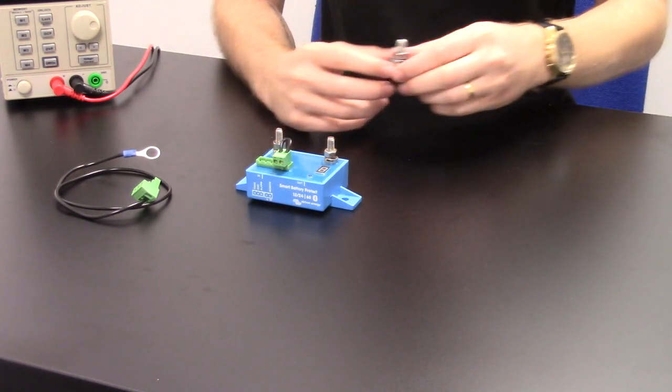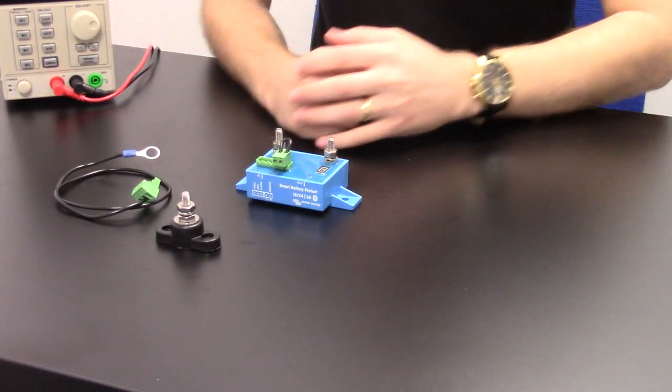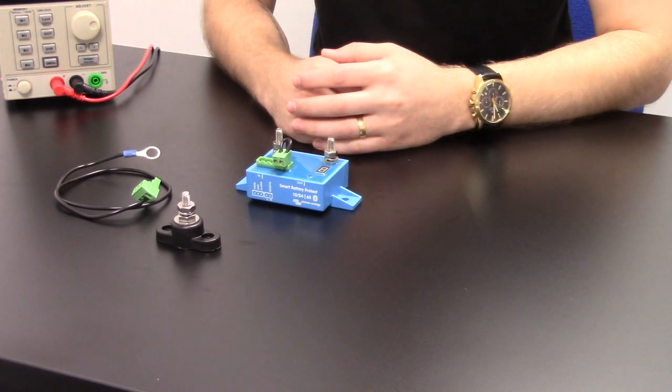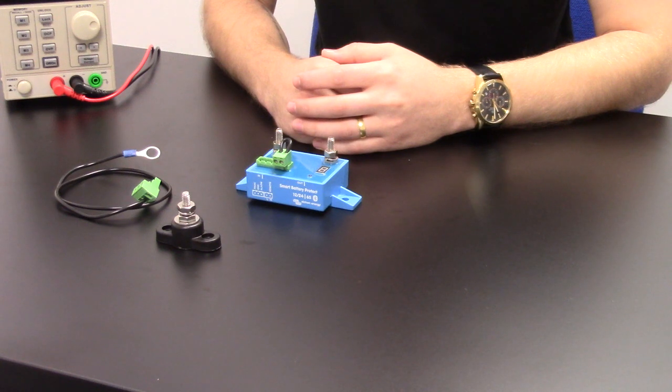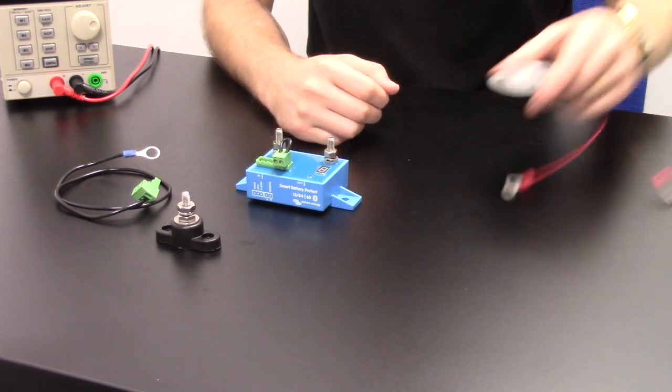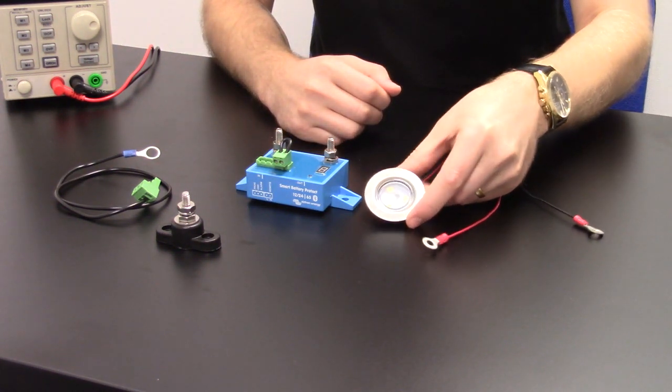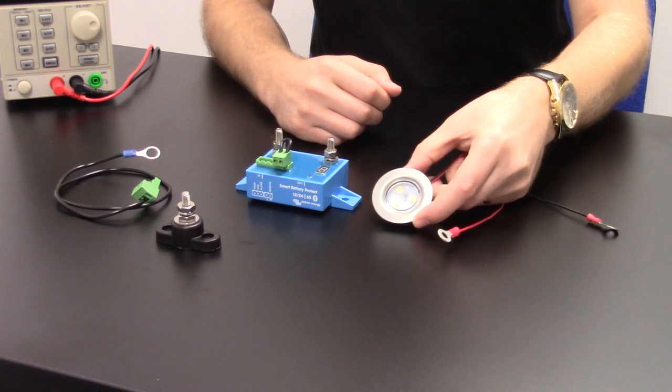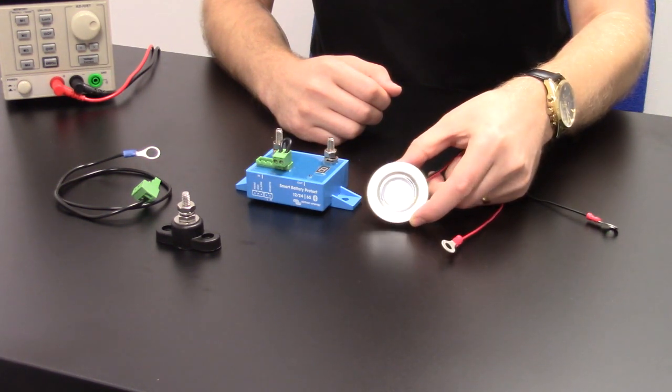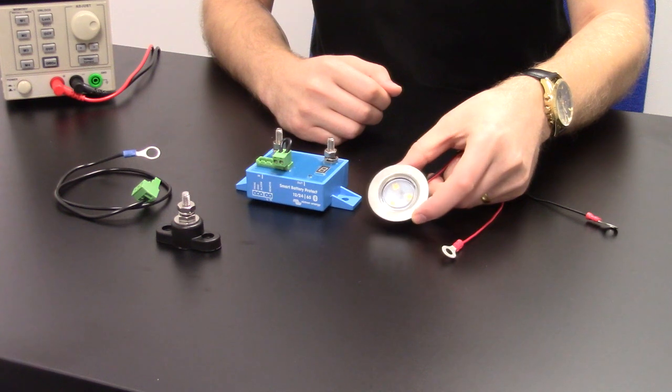So for the purpose of this video we will be attaching our negative connections to a power post which are available on our website. This will help just make everything neater for the installation. We will be using one of our bigger lights and this will just allow us to have a visual indication of when the unit disconnects our outputs.